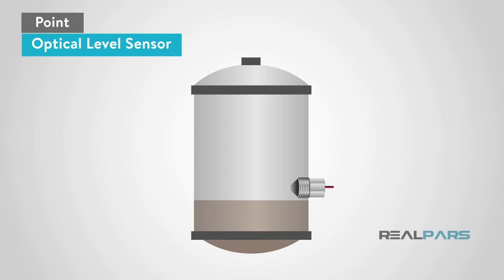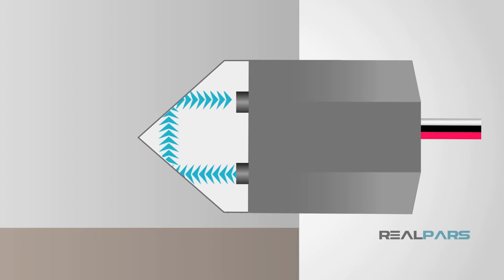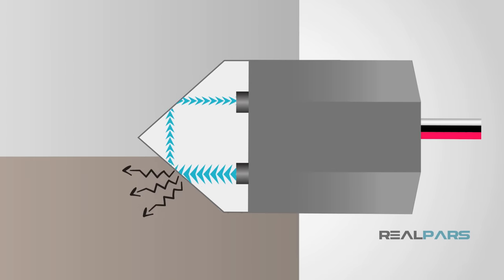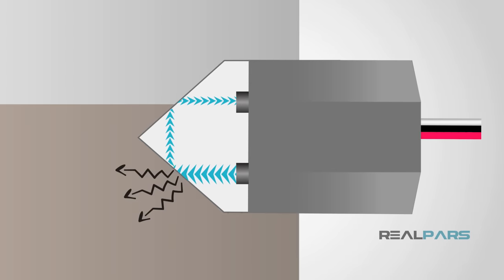The next Point Level Sensor we will talk about is an Optical Level Sensor. Optical sensors work by converting light rays into electrical signals, which measure a physical quantity of light, then translate it into a measurement.